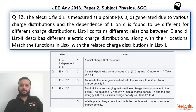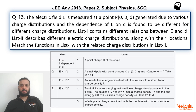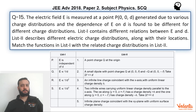Hi, dear students. Let's see this question that came in JEE Advanced, Paper 2, Physics, in the year 2018. In this question, basically this question is from electrostatics and this is based on matrix match type. The question is simple, nothing critical about this and I'm sure that almost all the students would have done this without much problems. Let's see what's happening over here.